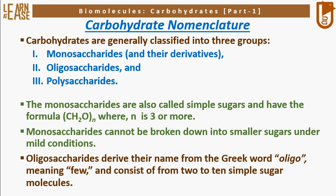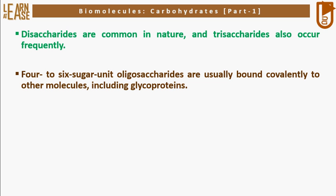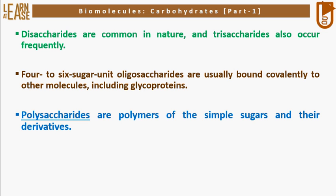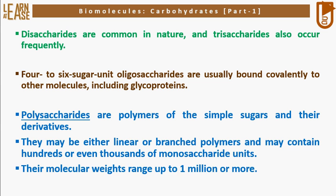Oligosaccharides derive their name from the Greek word oligo, meaning few, and consist of from 2 to 10 simple sugar molecules. Disaccharides are common in nature and trisaccharides also occur frequently. Four to six sugar unit oligosaccharides are usually bound covalently to other molecules, including glycoproteins. Polysaccharides are polymers of the simple sugars and their derivatives, either linear or branched, and may contain hundreds or even thousands of monosaccharide units. Their molecular weights range up to 1 million or more.